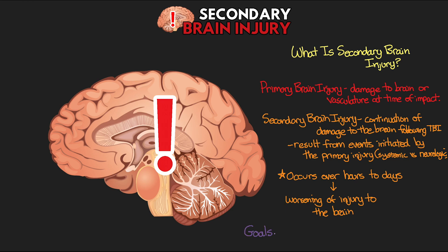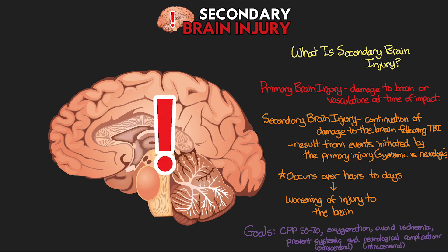Our management of TBI is primarily focused around the prevention or minimization of secondary brain injuries. We can think of this with the overarching goal of maintaining an adequate cerebral perfusion pressure — which is 50 to 70 mmHg — and oxygenation, avoiding ischemia of the brain, and preventing both the systemic (extra-cerebral) and neurological (intracerebral) complications.